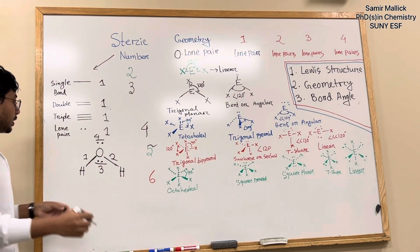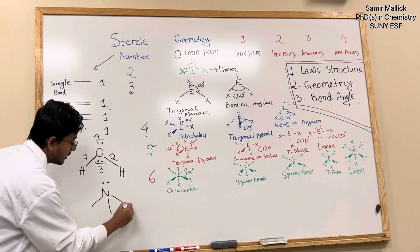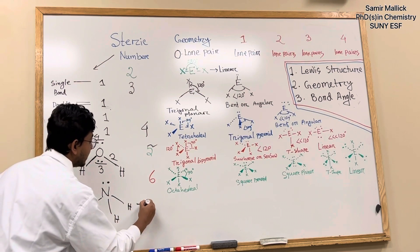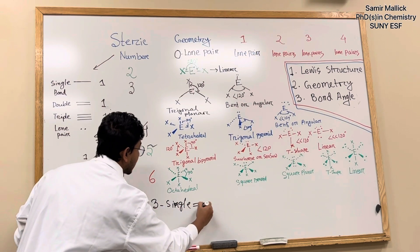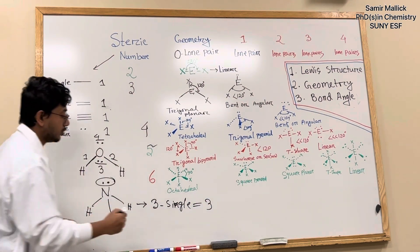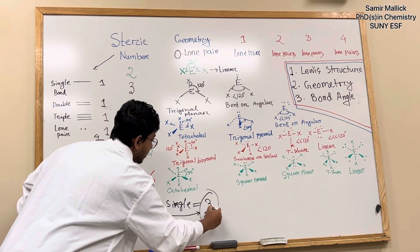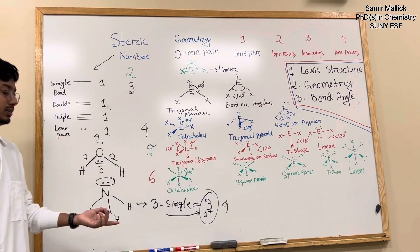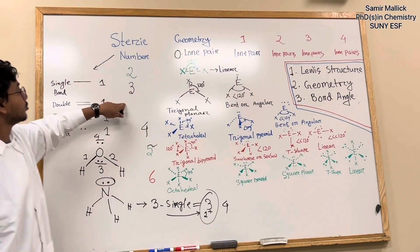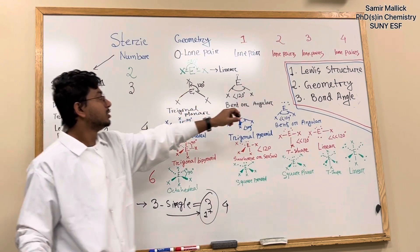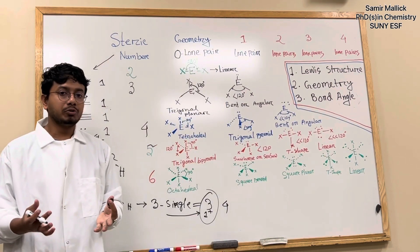For any compound like ammonia, you can see that structure. Ammonia has 3 single bonds and 1 lone pair, so ammonia also has a steric number of 4. Once we count that steric number, then we can go through the Lewis structure, geometry, and bond angle of any compound.